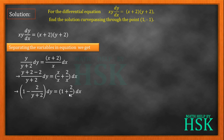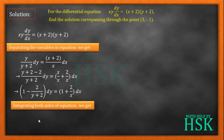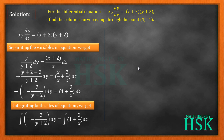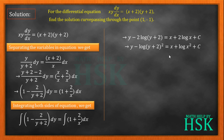The equation becomes the integration of (1 - 2/(y+2)) dy = integration of (1 + 2/x) dx. Integrating both sides: the integral of 1 is y, the integral of 1/(y+2) is log(y+2), giving minus 2·log(y+2). On the right side, the integral of 1 is x and the integral of 1/x is log(x), giving 2·log(x) + c. The 2 is taken as a power, yielding log(y+2)² and log(x²).